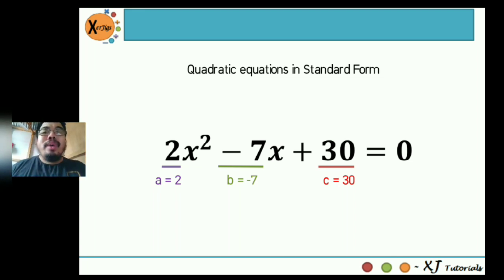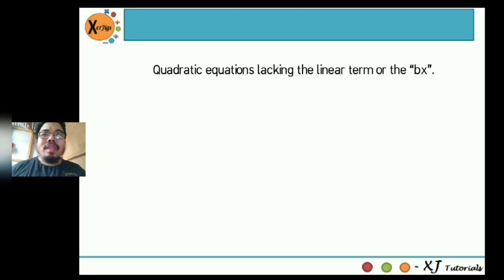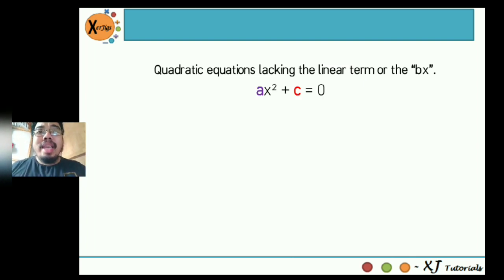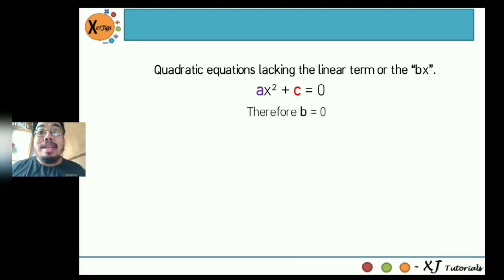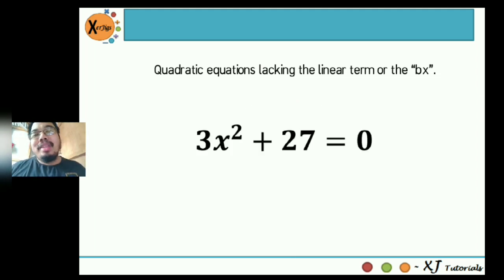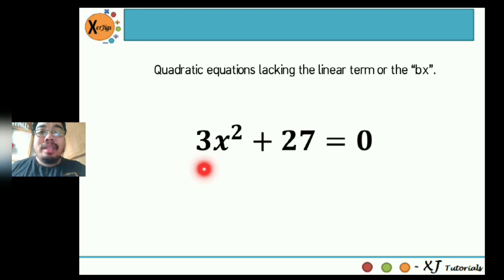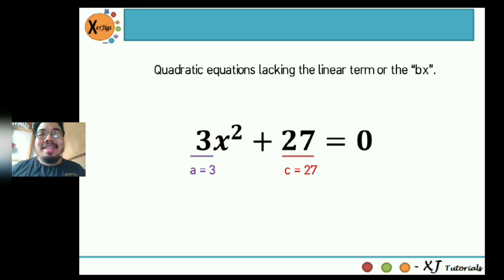At this point, how about if you're given quadratic equations lacking the linear term? If the standard form is ax squared plus bx plus c equals zero and we don't have the linear term bx, automatically the format becomes ax squared plus c equals zero. Since we don't have the linear term, automatically b is equal to zero. For example: 3x squared plus 27 is equal to zero. The value of a beside x squared is positive 3, the value of c is positive 27, and b is zero because we don't have any linear term.